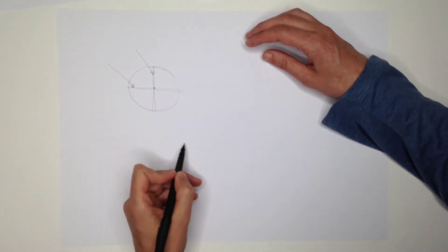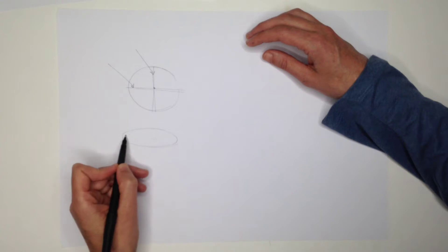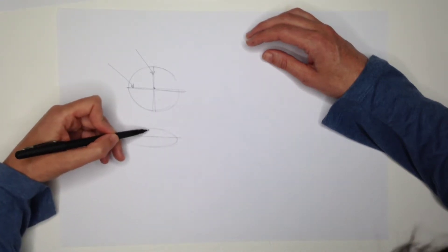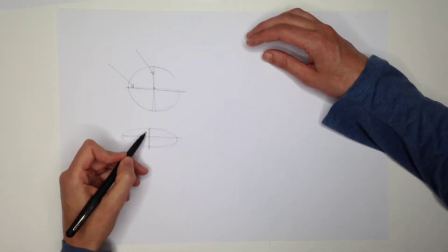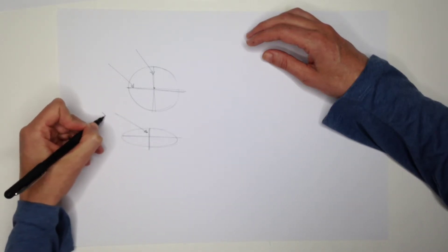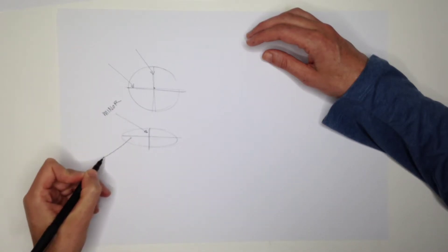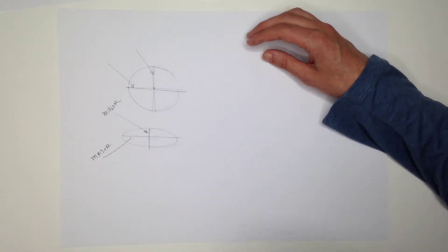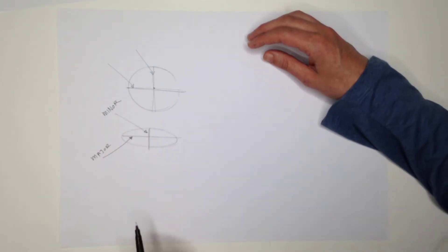If I put this circle in perspective on a flat plane, what happens is these lines change length. So we can still divide this symmetrically, but then these lines will get two different names. This we call the minor axis and this long one we'll call the major axis. It's important to remember those names because we're going to use them in our drawings.